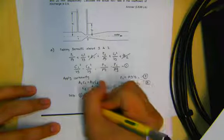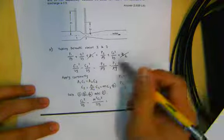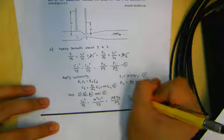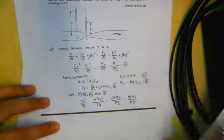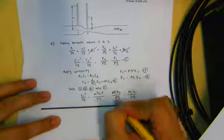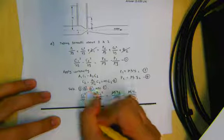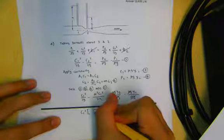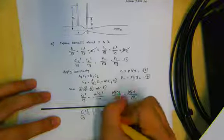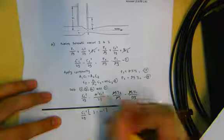Replacing C2, we get C1 squared over 2G minus M squared C1 squared over 2G on the left. On the right hand side this becomes rho G Y2 over rho G minus rho G Y1 over rho G. The rho G terms cancel, leaving Y2 minus Y1 on the right. Factorizing out C1 squared over 2G on the left gives C1 squared over 2G times (1 minus M squared) equals Y2 minus Y1.